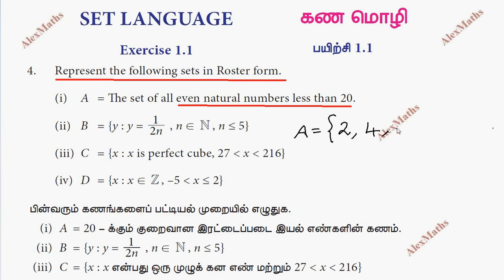2, 4, 6, 8, 10, 12, 14, 16, 18. That's it, less than 20, not going to be 20.